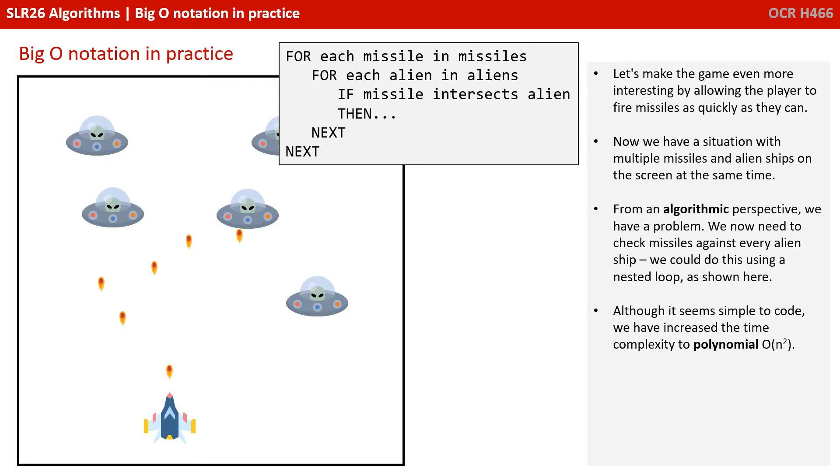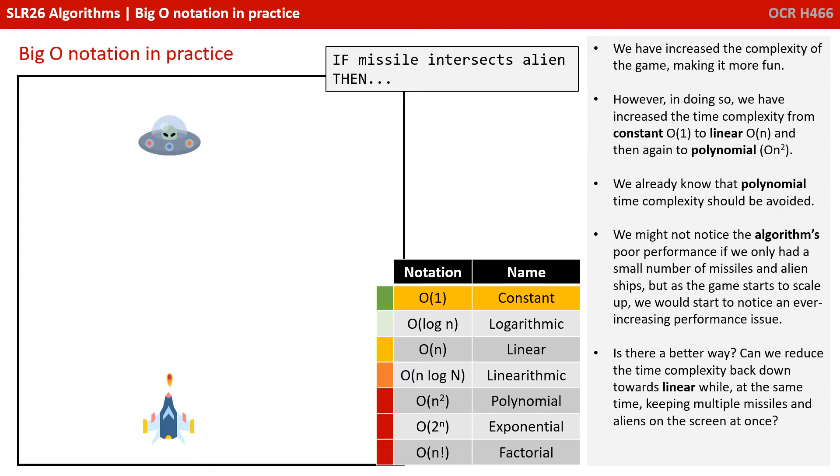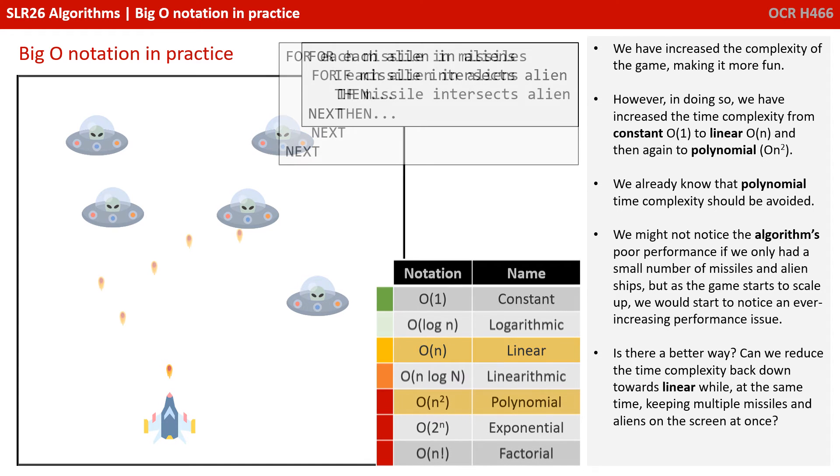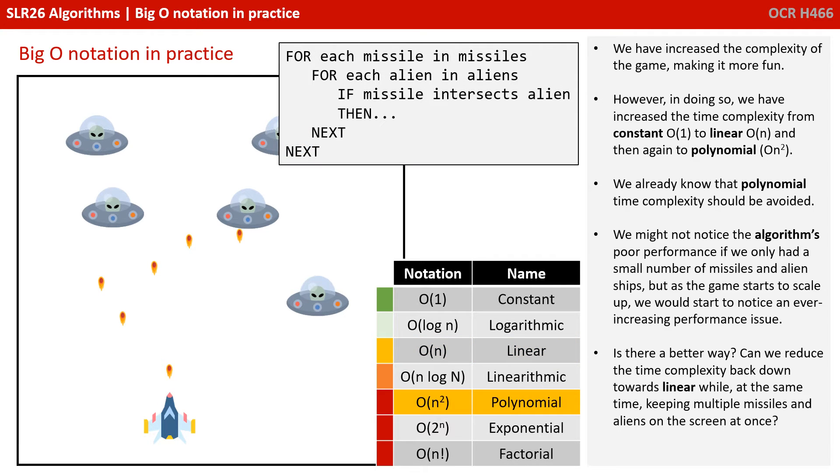Although it seems simple to code, we've increased the time complexity by doing a loop within a loop to polynomial or quadratic. We've increased the complexity of the game, making it more fun. However, in doing so, we've increased the time complexity from constant to linear through to polynomial. And we already know that polynomial time complexity should be avoided.